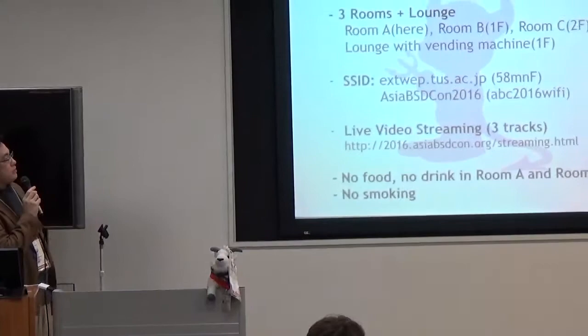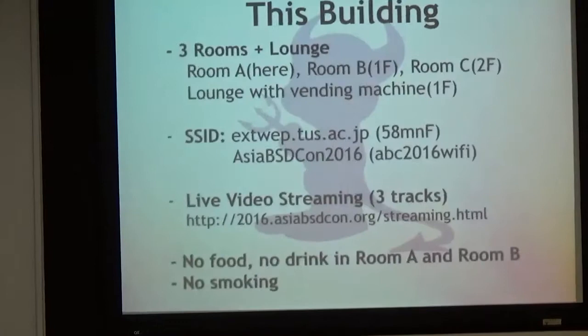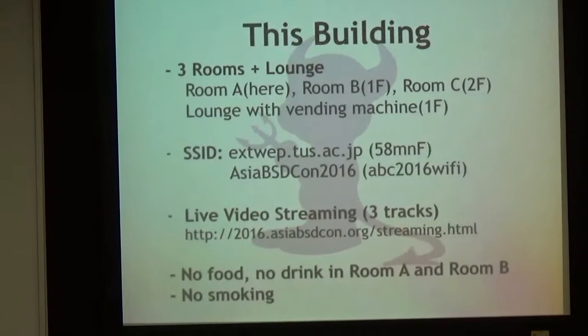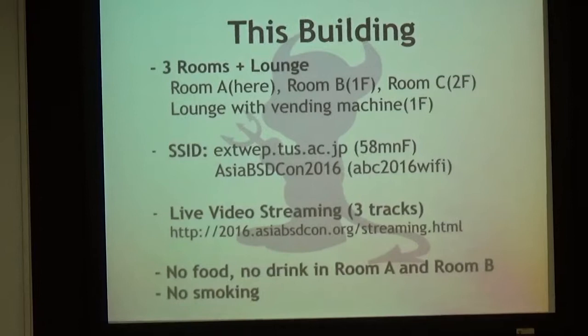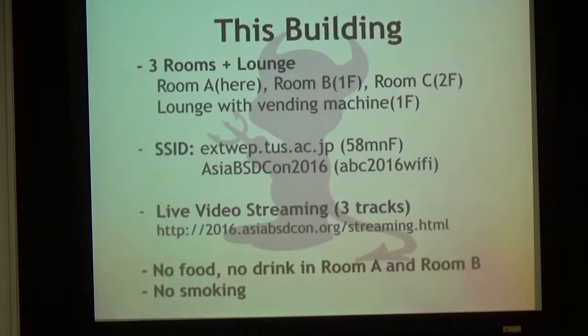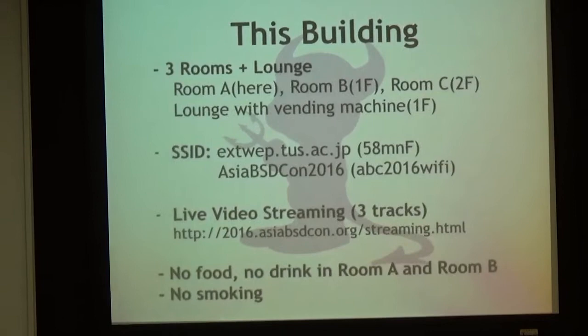Regarding the rules of this building: this building has three rooms. Room A is here, Room B is upstairs — a very similar room to this one — and Room C is on the second floor. In addition to these rooms, we have a lounge and a vending machine on the ground floor. We have two wireless networks: one is provided by the university, with the SSID and password written in the booklet you received.